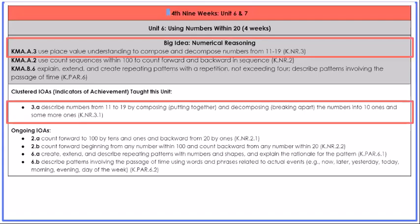While working with AKS 3 and IOA 3A, students will use specific sentence stems to represent teen numbers. When composing, students use the stem: '10 ones and ___ more ones is the same as ___.' When decomposing teen numbers, students use the stem: '___ is the same as 10 ones and ___ more ones.' While mastery of addition equations to represent teen numbers is not expected in kindergarten, students will be exposed to the equations.